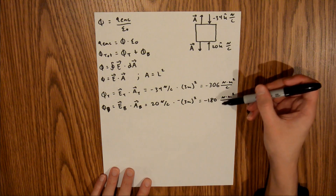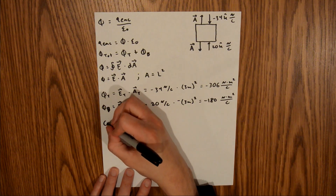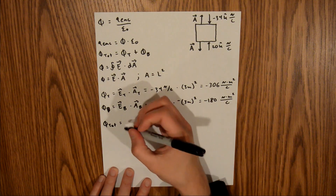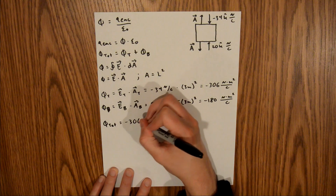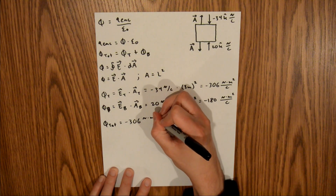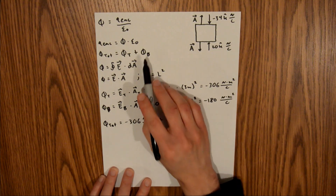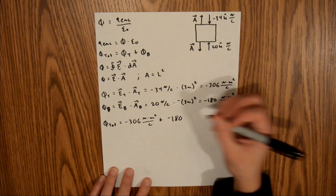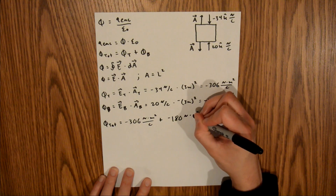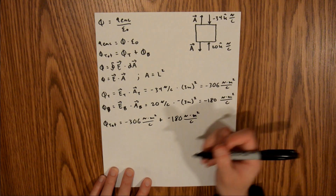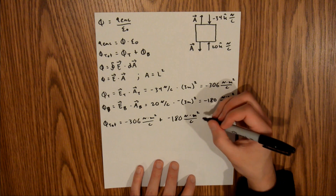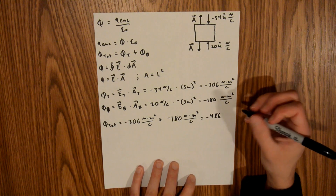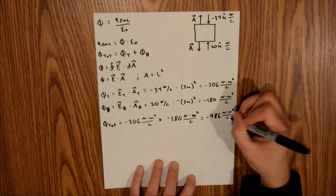Now we have both values needed to find our total flux. Flux total is equal to flux at the top, which is negative 306 newton·meters squared per coulomb, plus the flux at the bottom, which is negative 180 newton·meters squared per coulomb. Plugging that into the calculator gives negative 486 newton·meters squared per coulomb.